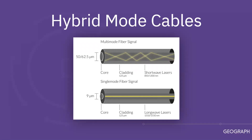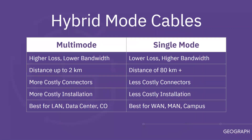Single-mode fiber enables one type of light mode to propagate at a time, while multi-mode fiber can propagate multiple modes. The difference mainly lies in fiber core diameter, wavelength, light source, bandwidth, color sheath, distance, and cost. To simplify: single-mode fiber is better for long-distance runs, while multi-mode is often a better solution for short-distance builds.